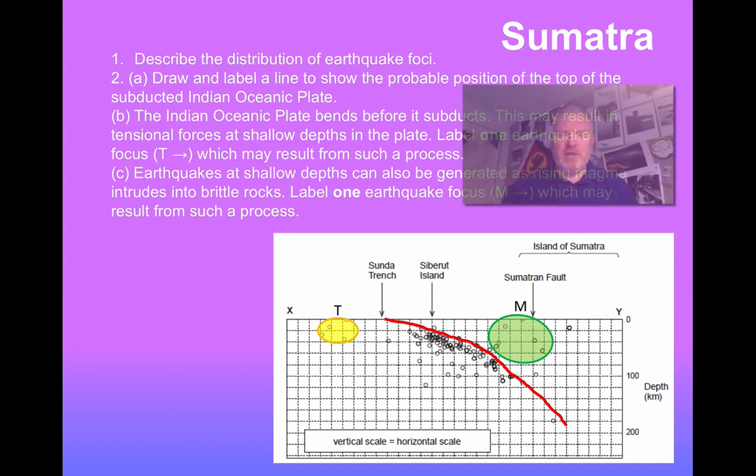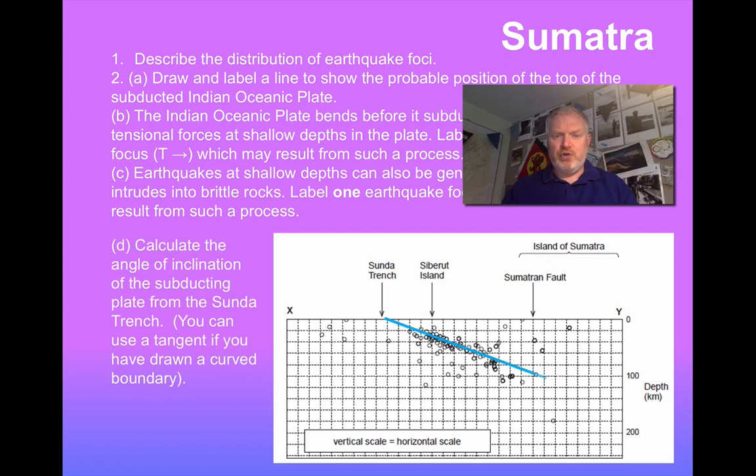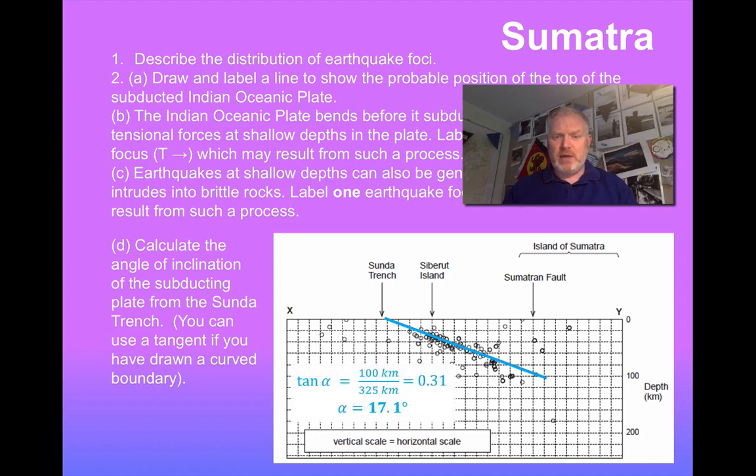Let's look at how we work out the angle here. If you draw a tangent or a straight line, something like that, we can then work it out. The tan is the opposite over the adjacent. 100 kilometres over 325. I get that to about 0.31, which gives me an angle of just over 17 degrees.